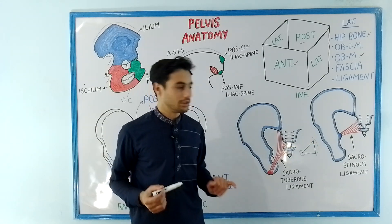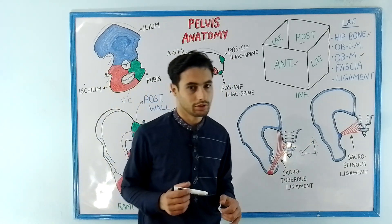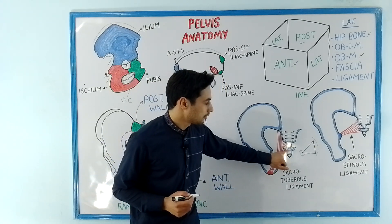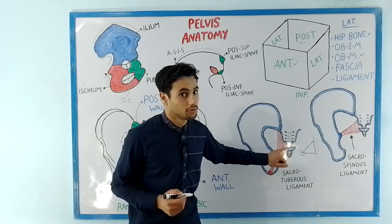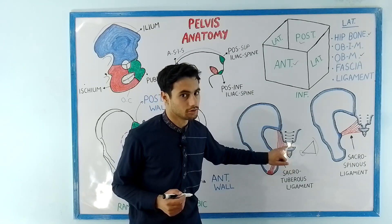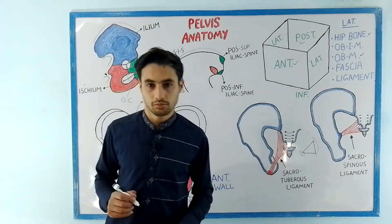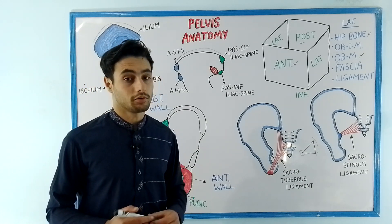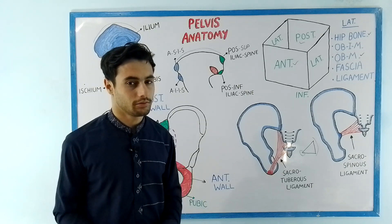These ligaments — the sacrotuberous ligament and the sacrospinous ligament — prevent the rotation of the coccyx and sacrum bone at the sacroiliac joint and sacrococcygeal joint. This was all about the lateral wall of the pelvis. In the next video we will study about the pelvic floor or the inferior wall of the pelvis.